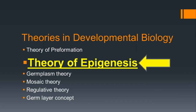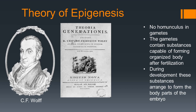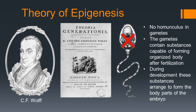The theory of epigenesis was proposed by C.F. Wolf based on his experiments on the development of the chick embryo, and his results were published in the book Theoria Generations. According to the theory of epigenesis, there is no preformed embryo in the gametes. The gametes contain substances capable of forming the organized body, and development of the new organism takes place only after fertilization. During development, the substances present in the egg arrange themselves to form the different body parts of the embryo.